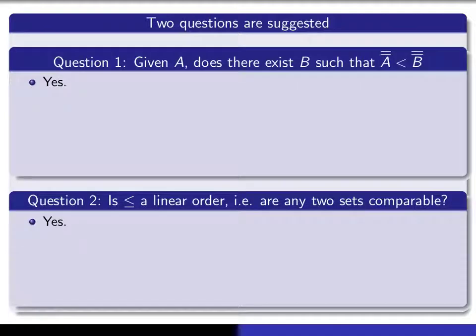Now, I think this new definition of the way we compare cardinalities suggests two questions. The first question is, given a set A, is it always the case that there exists a set B that has a strictly bigger cardinality?